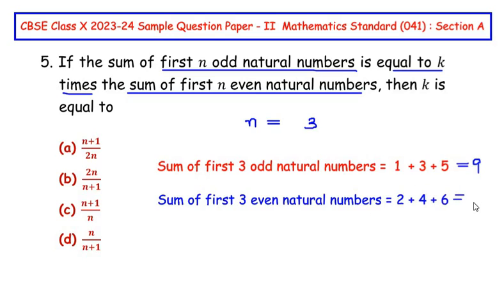Now they have told to form an equation. Sum of first n odd natural numbers equals k times sum of first n even natural numbers. So 9 equals k times 12. So k is going to equal 9 divided by 12. Simplifying this, we get 3 over 4. So k value has to be 3/4 when we take n equals 3.